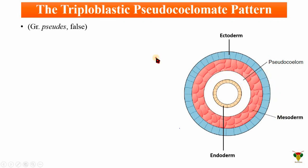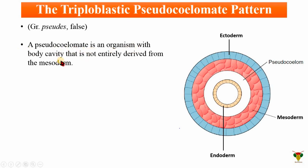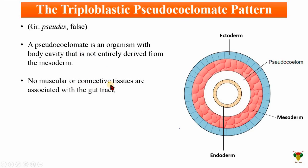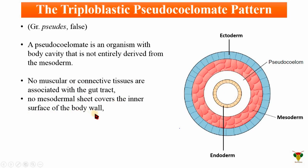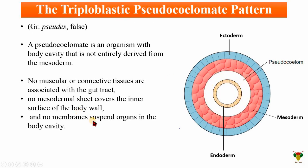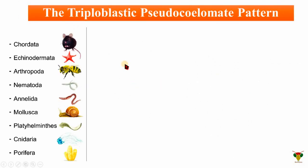The space between mesoderm and endoderm splits and makes a coelom known as the pseudocoelom, which is not completely mesodermal in origin. A pseudocoelomate is an organism with a body cavity that is not entirely derived from the mesoderm. In pseudocoelomate organisms, no muscular or connective tissues are associated with the gut tract — the gut tract is directly present with no mesodermal tissues attaching to the endoderm. No mesodermal sheet covers the inner surface of the body wall, and no membrane suspends organs in the body cavity — meaning organs are loosely present in the pseudocoelom.